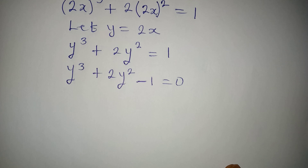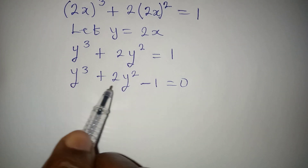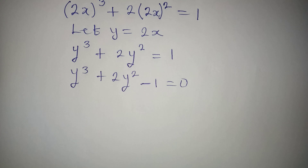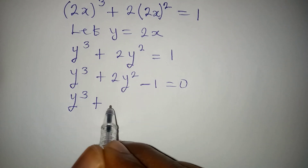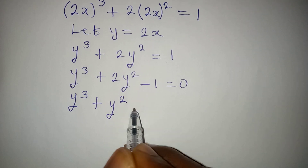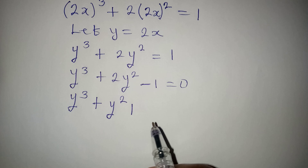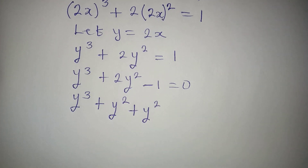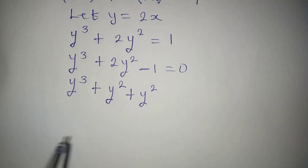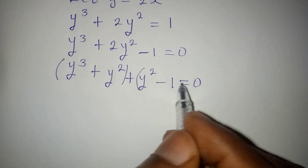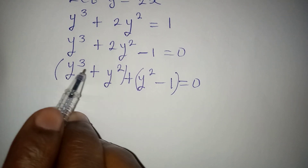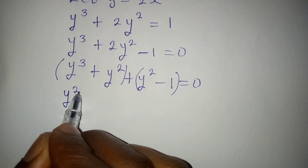Now let's look for a way to factorize this. Because we have three terms it's difficult to factorize directly, so I expand and regroup: y³ plus y² plus y² minus y equals 0. This way I can group into two pairs and factorize, taking y² as a common factor from the first group, giving y²(y plus 1).